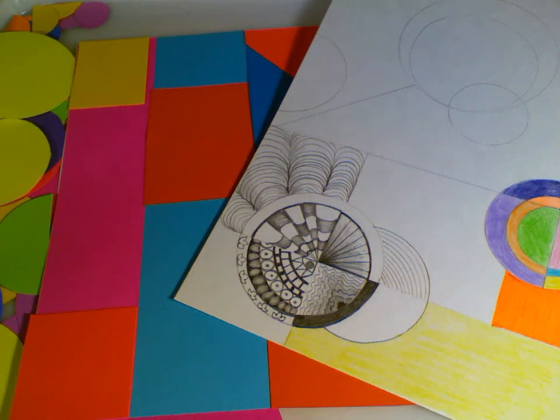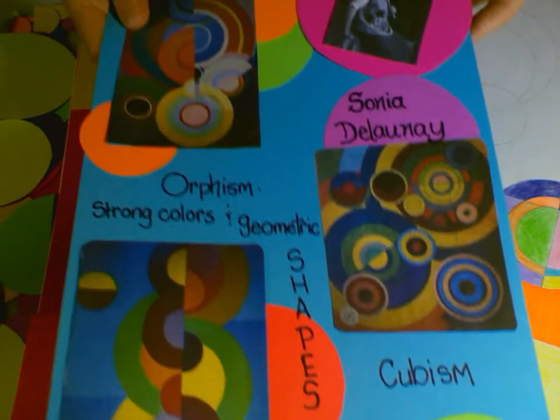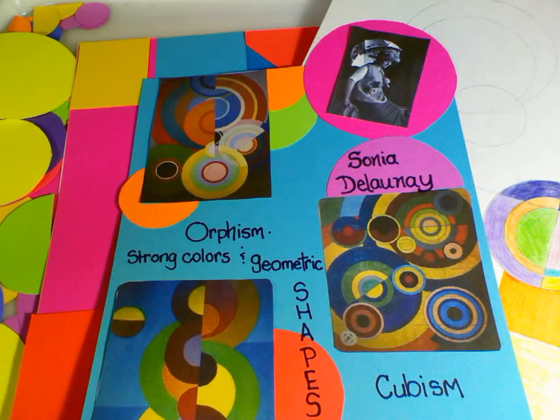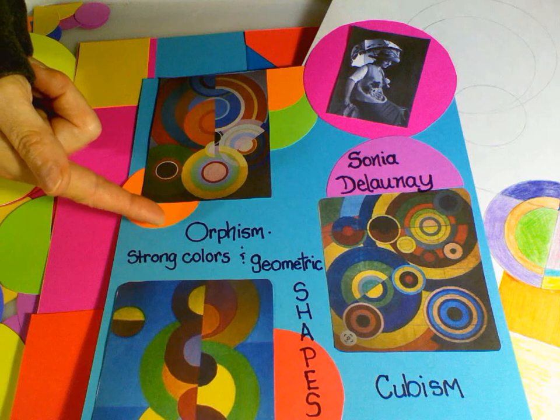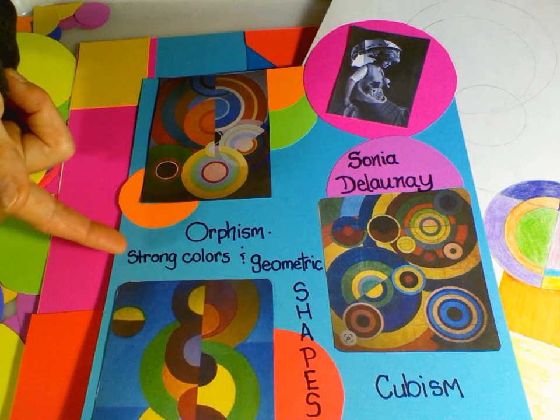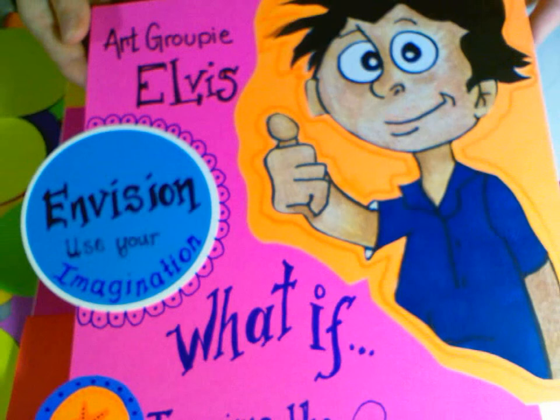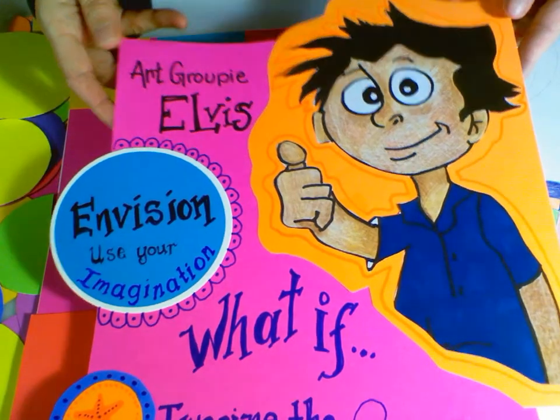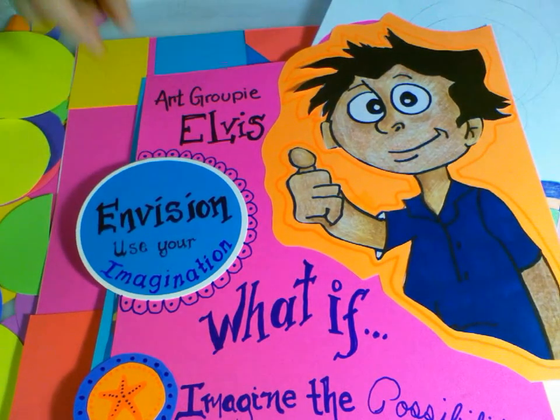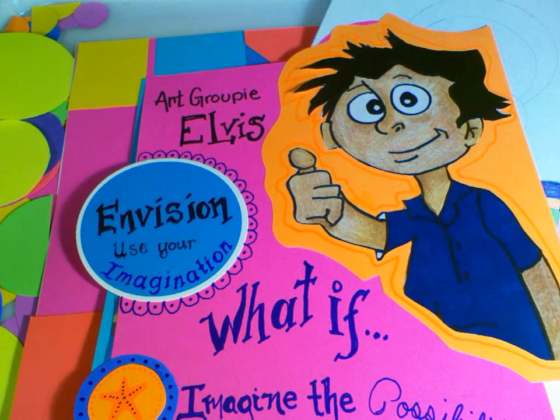So again, the artist that we're working with today is Miss Sonia Delaunay. She created Orphism, strong colors and geometric shapes, and very influenced by cubism. And our art groupie for the day was Elvis. Imagine the possibilities. So have fun creating and do a great job. Can't wait to see your art.